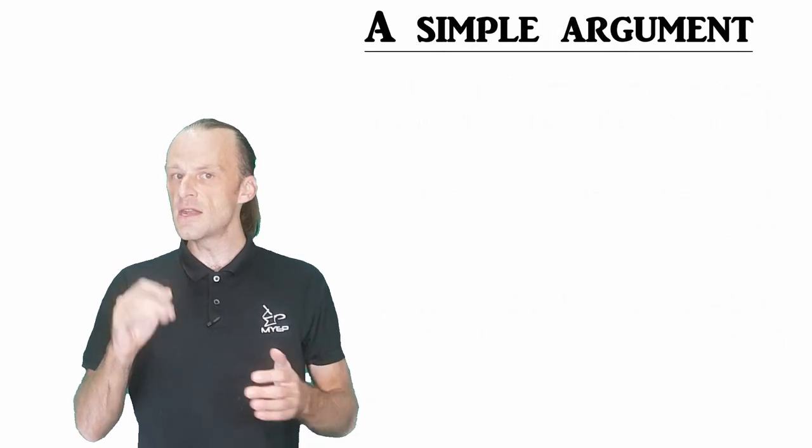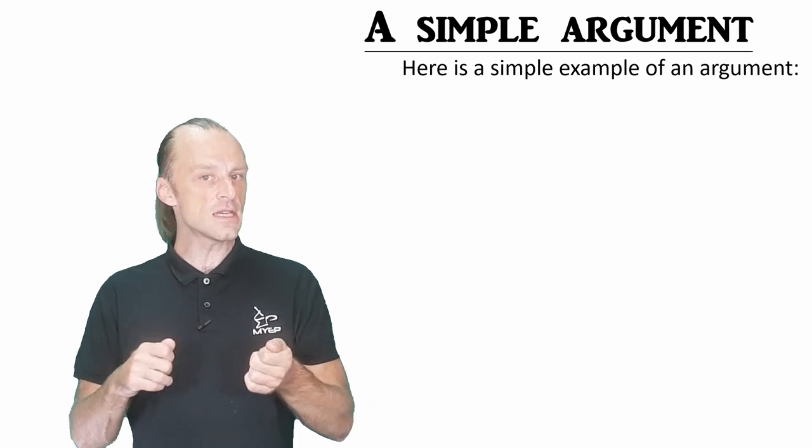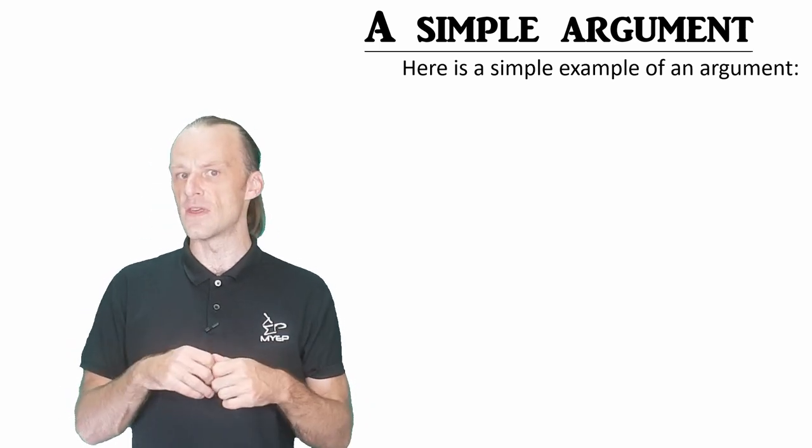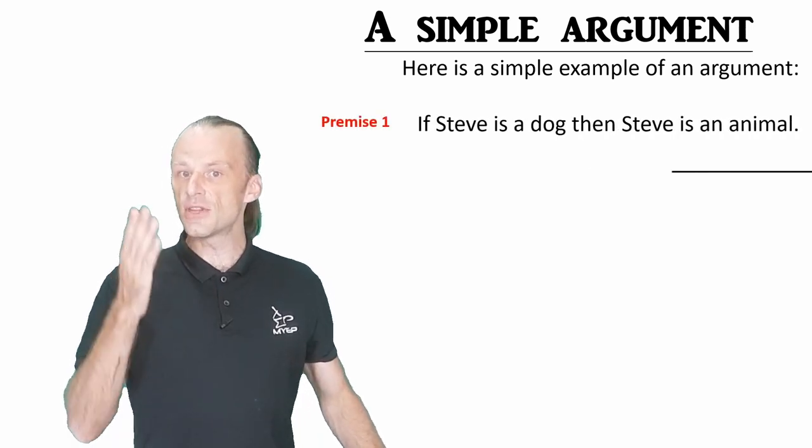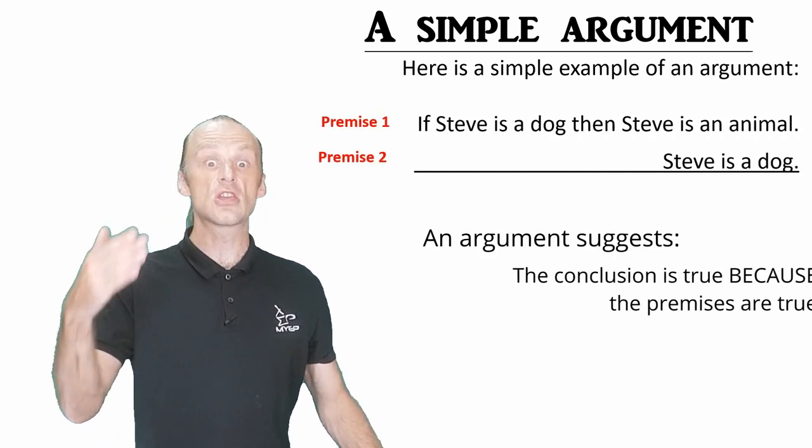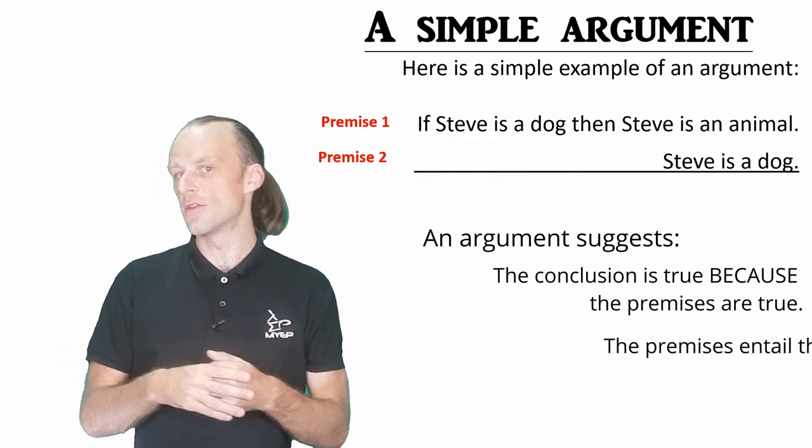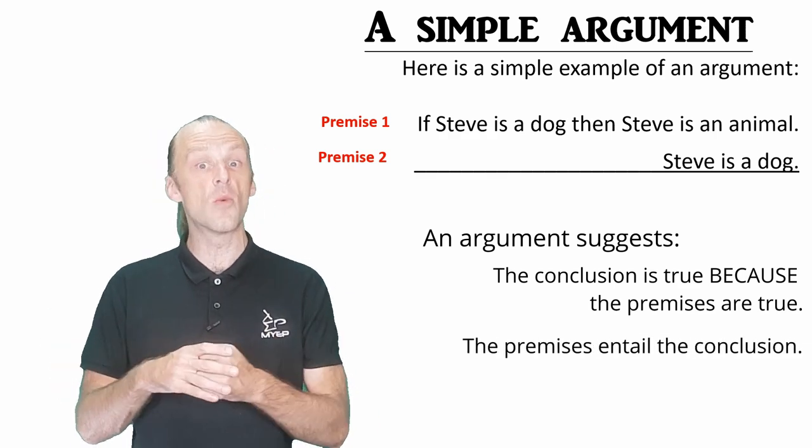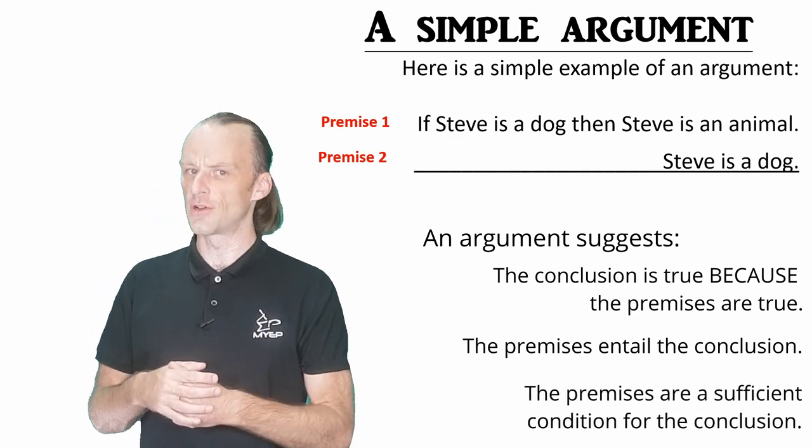Let's look at another simple argument. Remember, we said when we make an argument, the statements we use as evidence are our premises, and these support the conclusion of the argument, which is what we want to claim. We suggest that the conclusion is true because the premises are true. The premises entail the conclusion, or one more way, the premises are a sufficient condition for the conclusion.